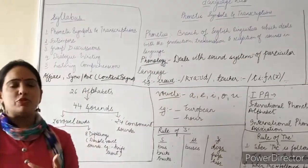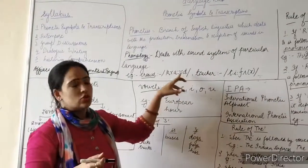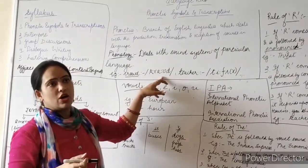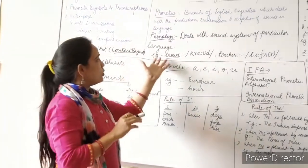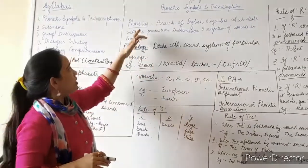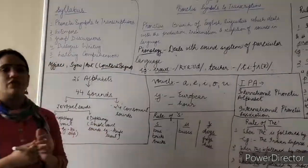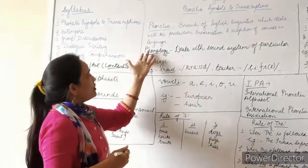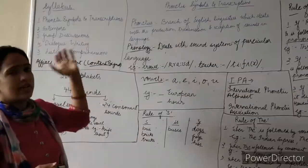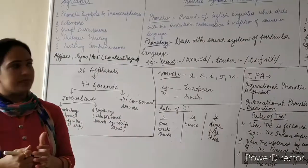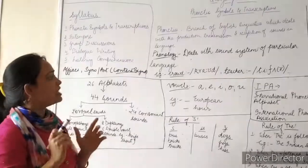Now, what is phonetics? It is the branch of English linguistics which deals with the correct pronunciation, the production and transmission of speech sounds in the language. Apart from that, what is phonology? It deals with the sound system of a particular language. This is a major difference between phonetics and phonology, and it is often asked during your viva voce.